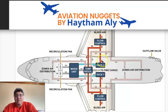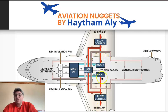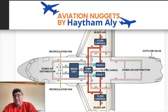So, if you are ever asked what the function of the packs is: the packs perform basic temperature regulation, taking the bleed air from hot, high-pressure conditions down to a basic comfortable temperature — roughly in the range of 20 degrees or below.